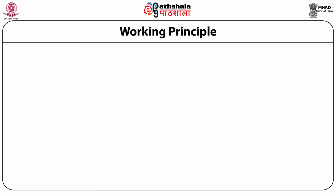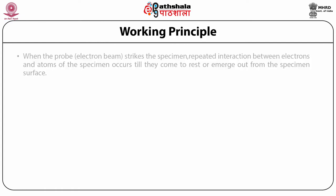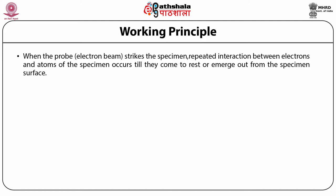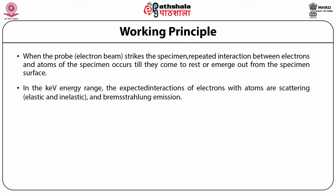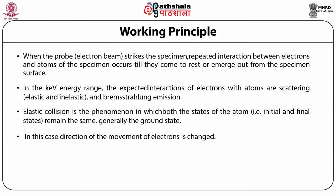Let us discuss the working principle of Electron Probe Microanalyzer. When the probe or electron beam strikes the specimen, repeated interaction between electrons and atoms of the specimen occurs, till they come to rest or emerge out from the specimen surface. In the kV energy range, the expected interactions of electrons with atoms are scattering, either elastic or inelastic, and Bremsstrahlung emission. Elastic collision is the phenomenon in which both the initial and final states of the atom remain the same, which is generally the ground state. In this case, the direction of movement of electrons is changed.